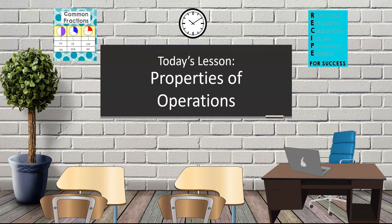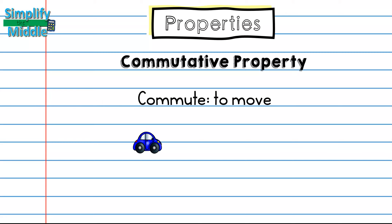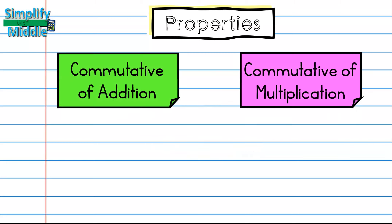Hi and welcome to today's lesson on properties of operations. Today we're going to talk about a few different properties. The first one we'll start with is the commutative property. Commute means to move, and we've seen an example of this every time that we go to and from school or work. The commutative property is just talking about numbers that are going to be moving.